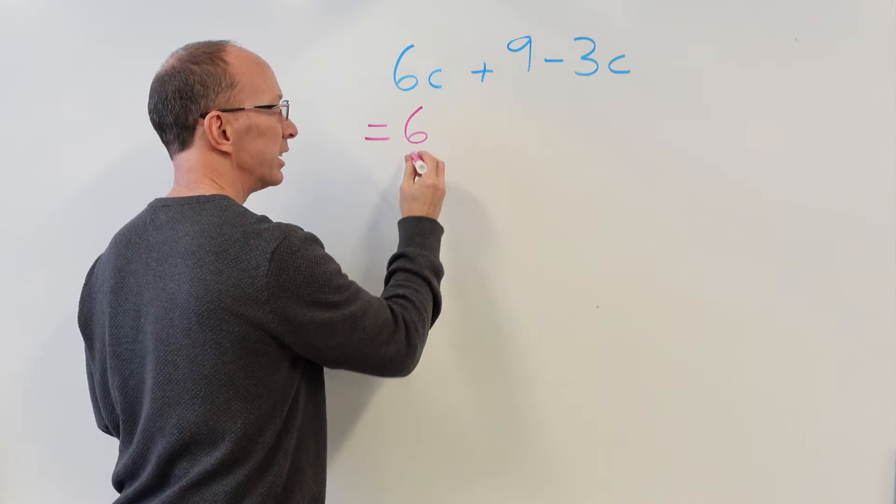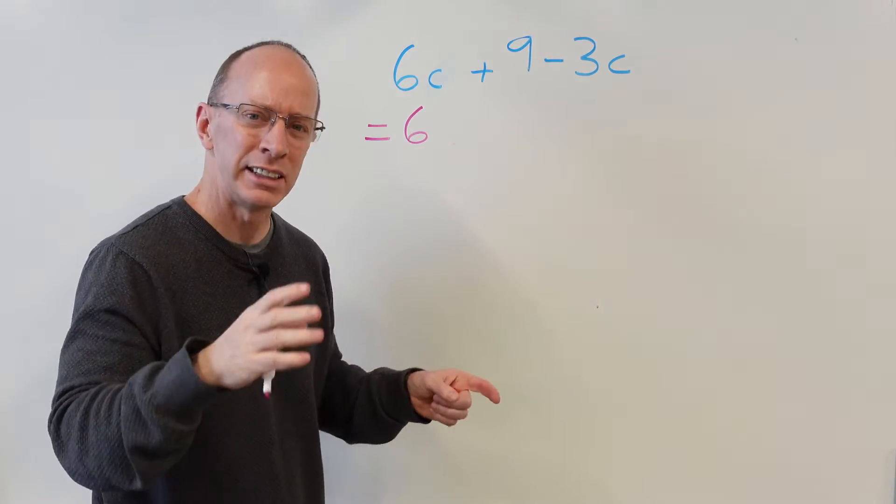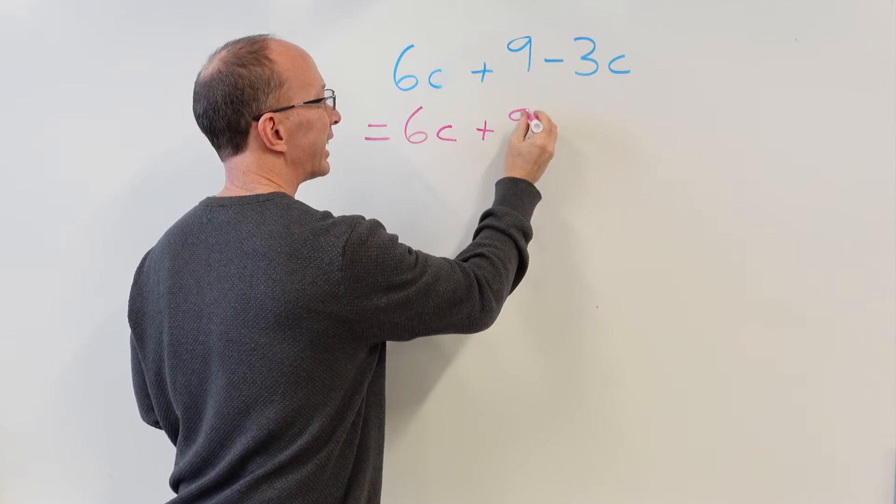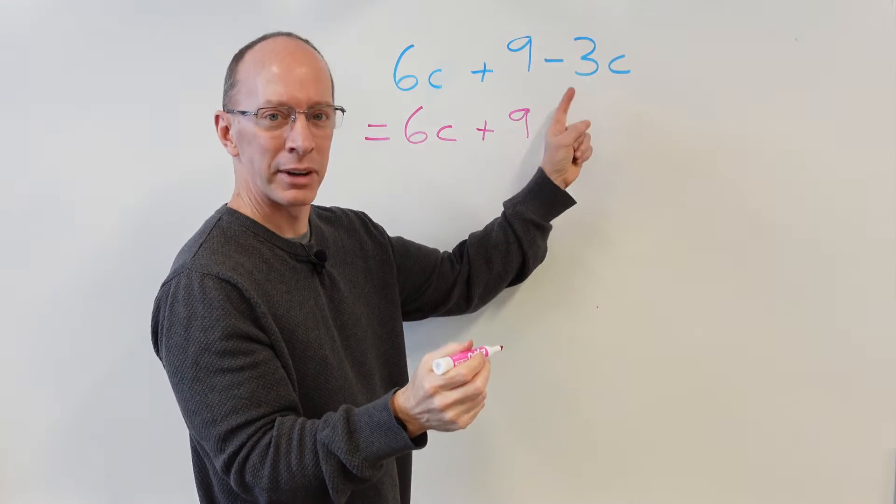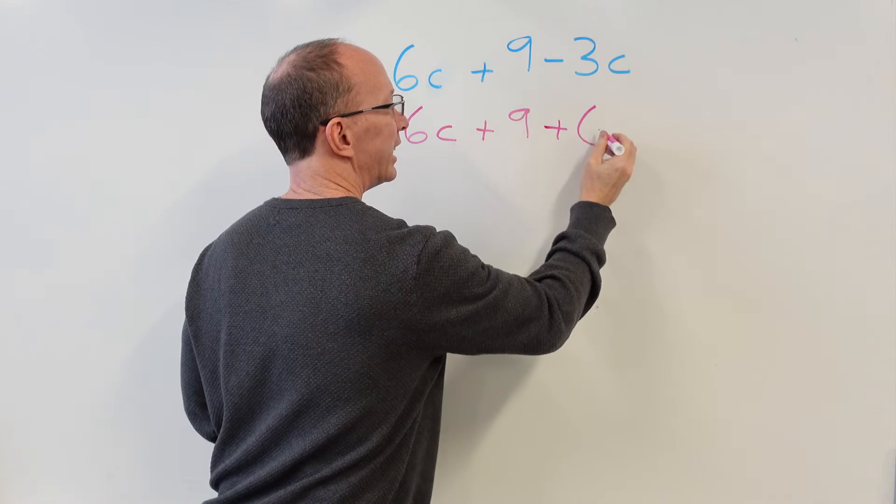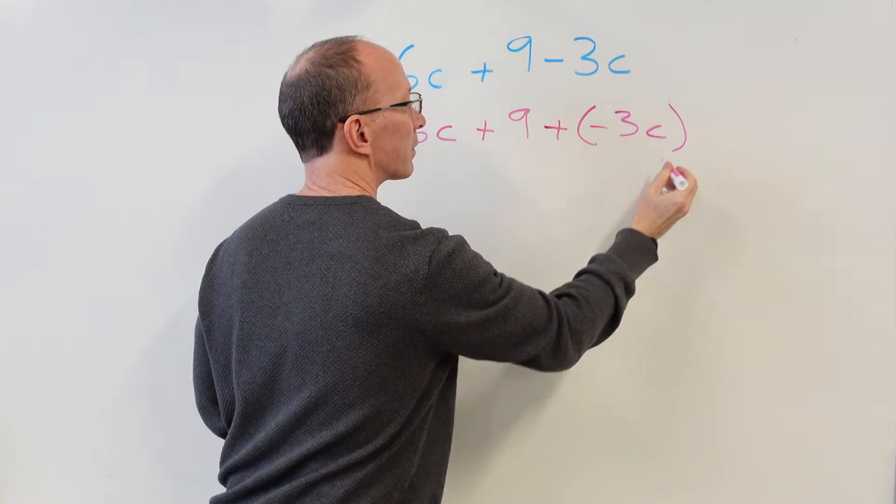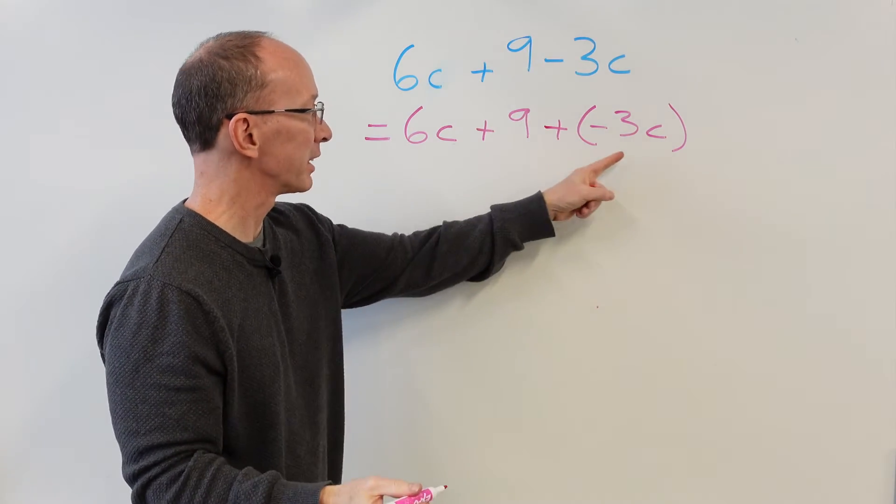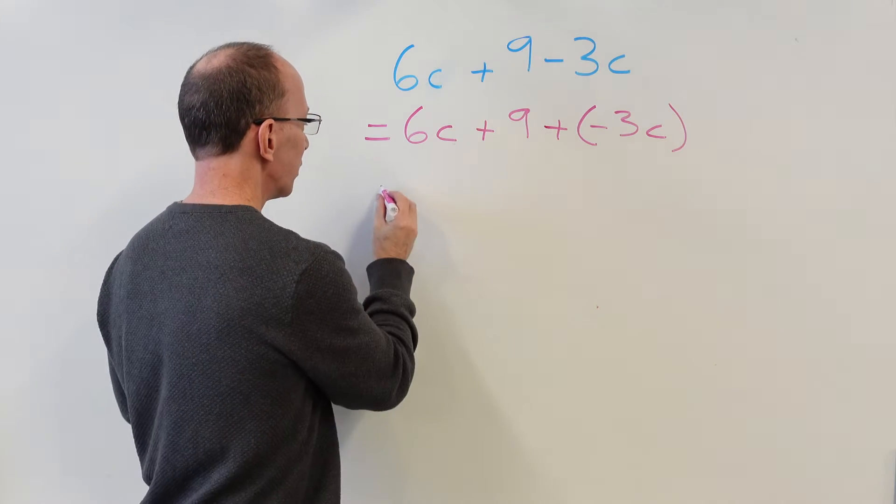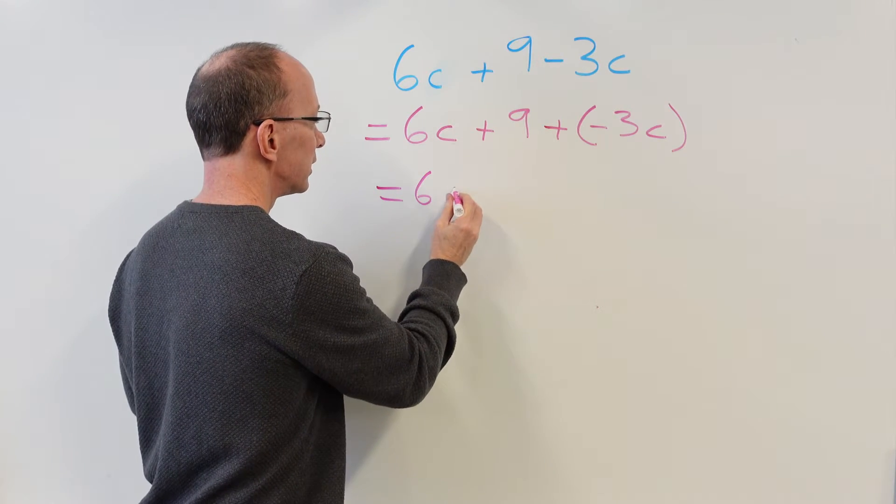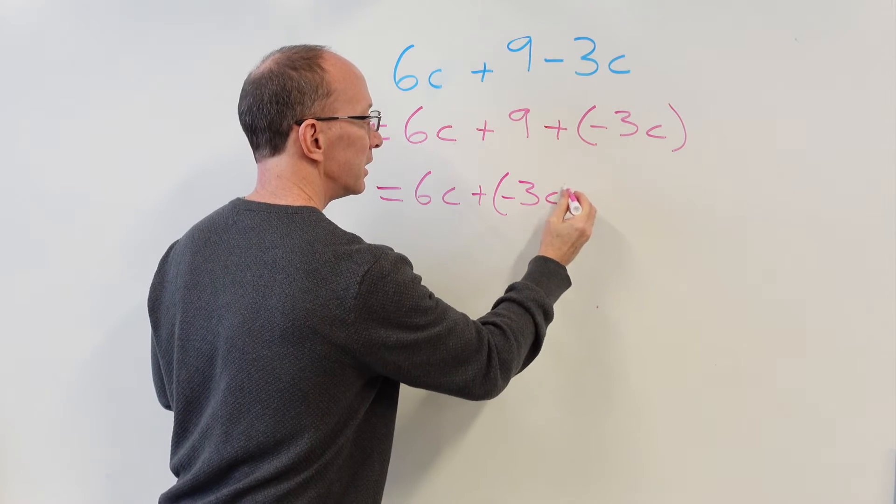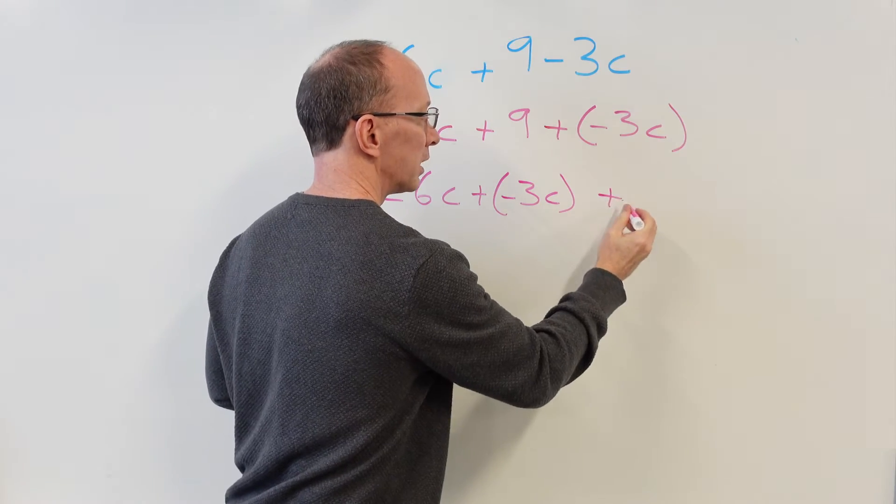We could put 6c. Remember when we're doing problems like that, there's always different ways on how you can go about it. 6c plus 9 plus the negative 3c. What I'm going to do is bring that 3c because that's a c right here and that's a c right there. It kind of belongs to the same family. So I'm going to bring that over here. 6c plus a negative 3c plus 9.